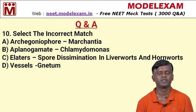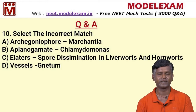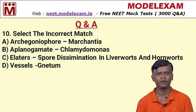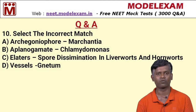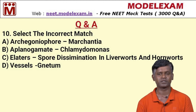Question number ten: select the incorrect match. Option A: archegonium corresponding to Marchantia. Option B: planogamete corresponding to Chlamydomonas. Option C: elaters corresponding to spore dissemination in liverworts and hornworts. Option D: vessels corresponding to Nita. It is clear that option B — planogamete corresponding to Chlamydomonas — is the incorrect match. So option B is the correct answer for question ten.